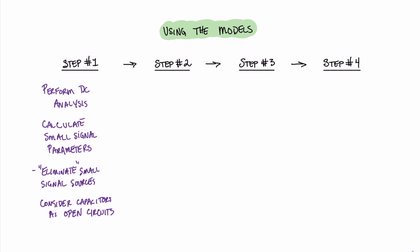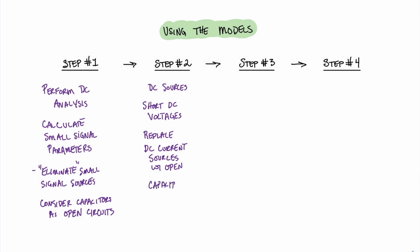Step two is all about getting our circuit ready to implement the small signal equivalent model. What we need to do is reconsider the DC sources as well as any of the capacitors in the original circuit. For step two, when it comes to DC sources, we're going to short DC voltage sources. And if we do happen to have any DC current sources, they'll be replaced with an open circuit. When it comes to capacitors in step two, we will consider them to be sufficient for whatever frequency our amplifier is operating at, and therefore they will become a short circuit.